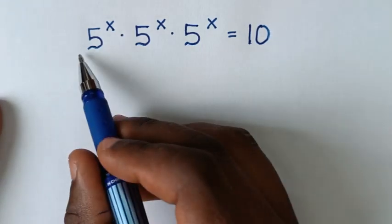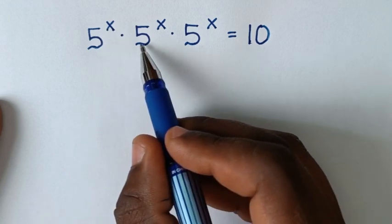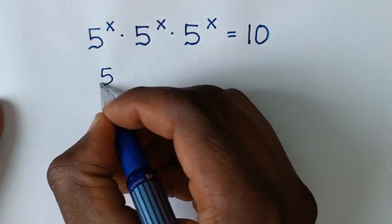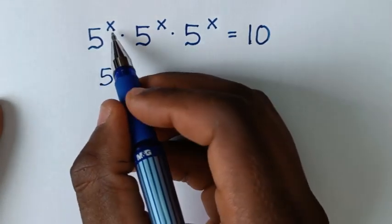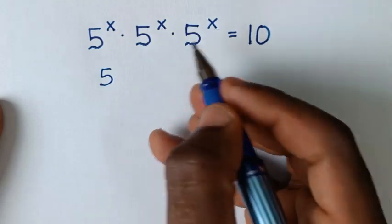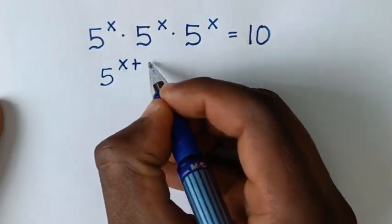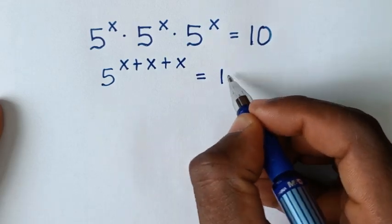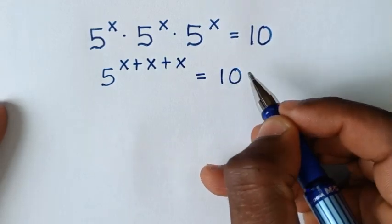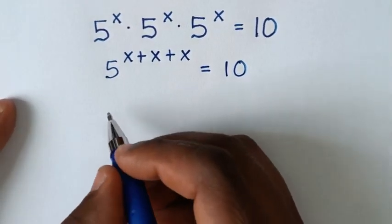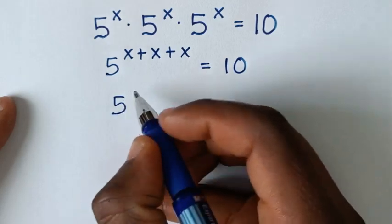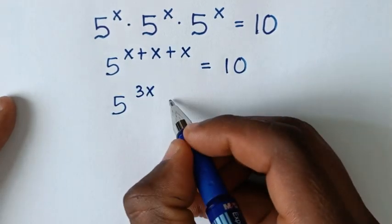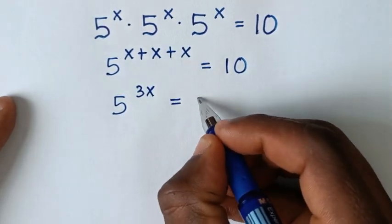Now on the left side, 5 power x times 5 power x times 5 power x is the same as 5, then we take this power plus this power plus this power, so it will be x plus x plus x is equal to 10. Then in the next step it will be 5 power 3x is equal to 10.